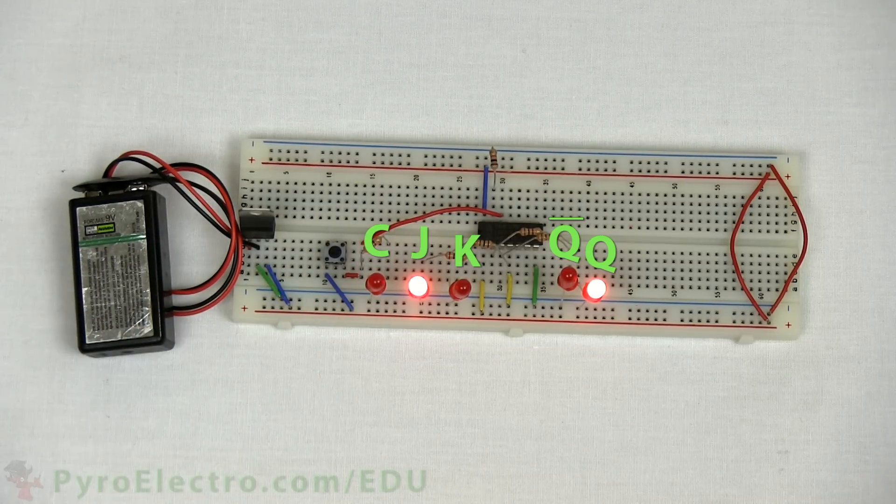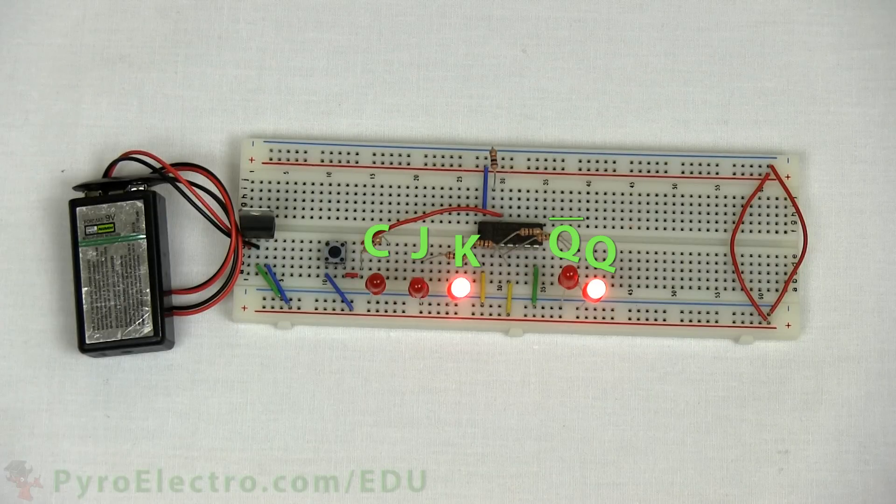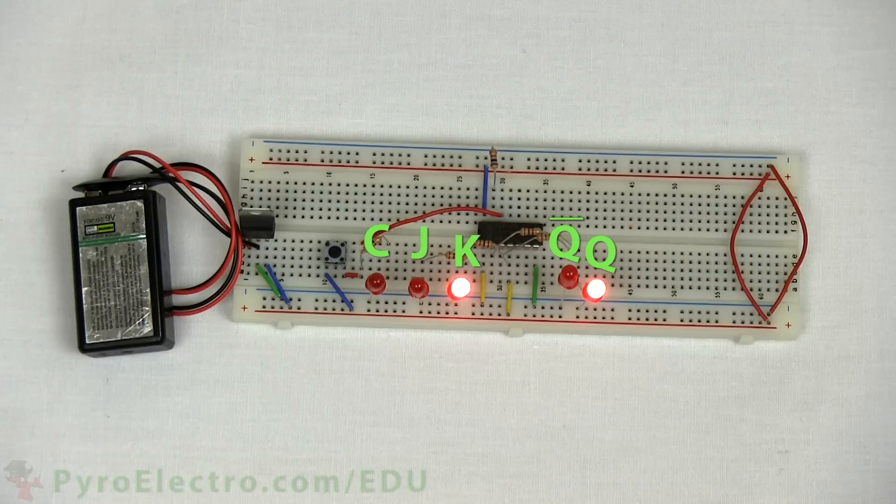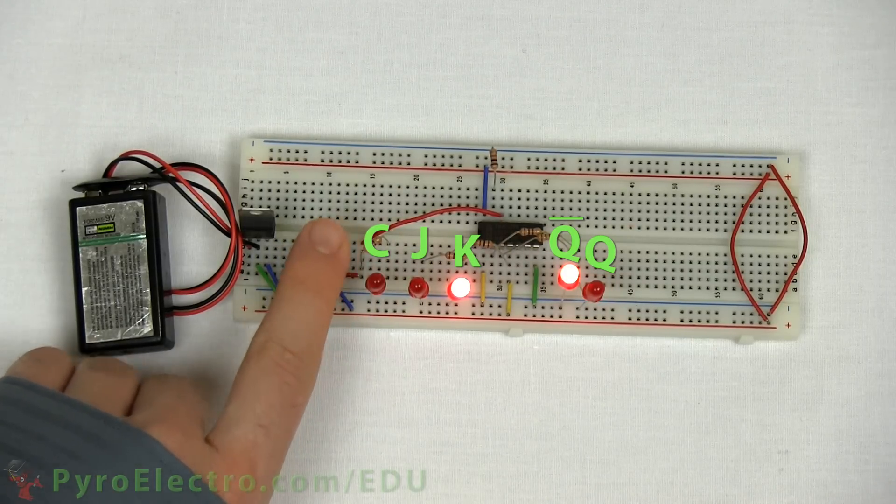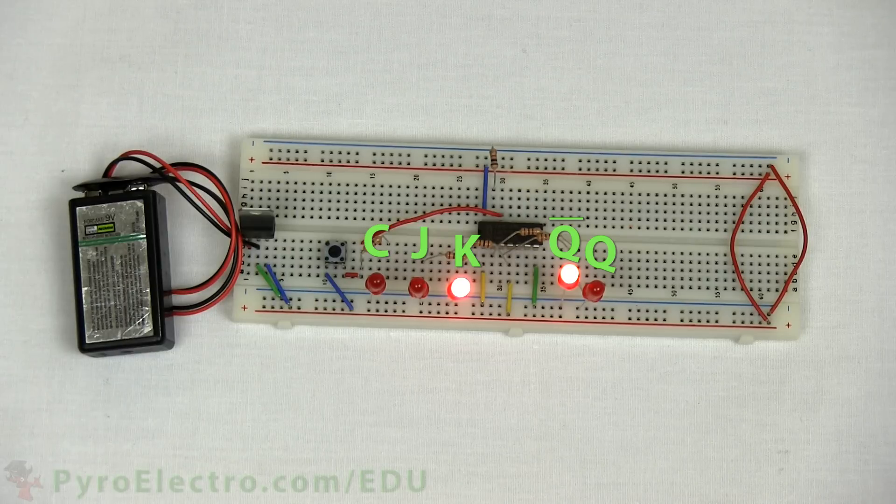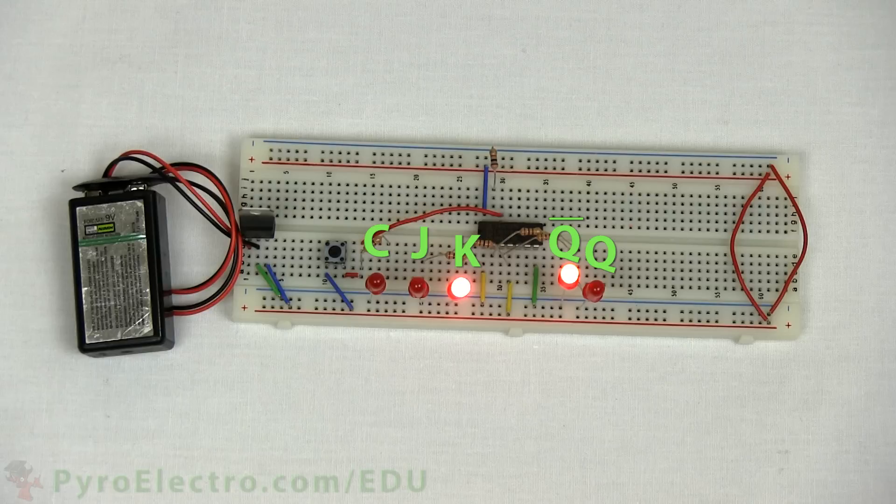And now, when we change the J input to a logic 0, and the K input to a logic 1, we press the push-button again to simulate a clock pulse, and then the flip-flop returns to its original output state. Thus, the JK flip-flop follows the truth table definition we saw earlier. The JK flip-flop is very good for setting specific states, just like we saw in the SR latch. The JK flip-flop can be seen as a 1-bit memory, since it holds its state.